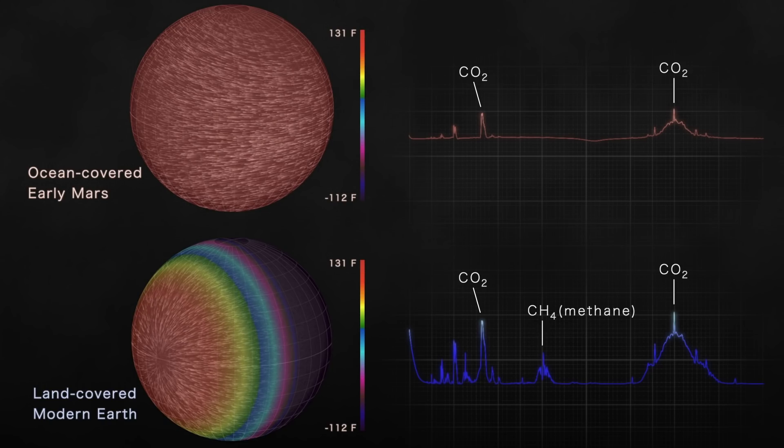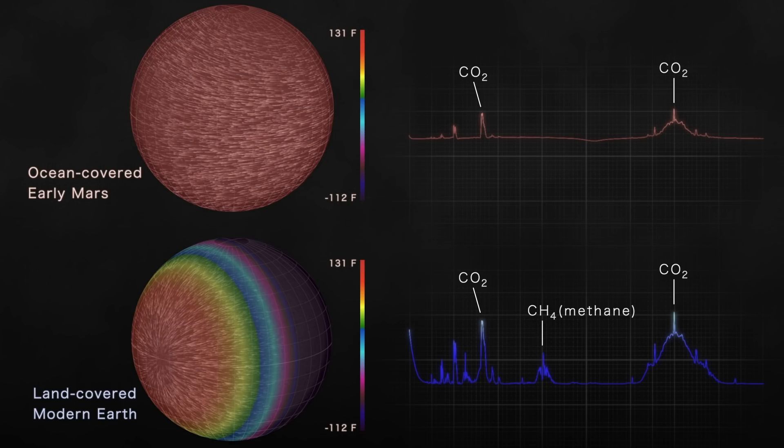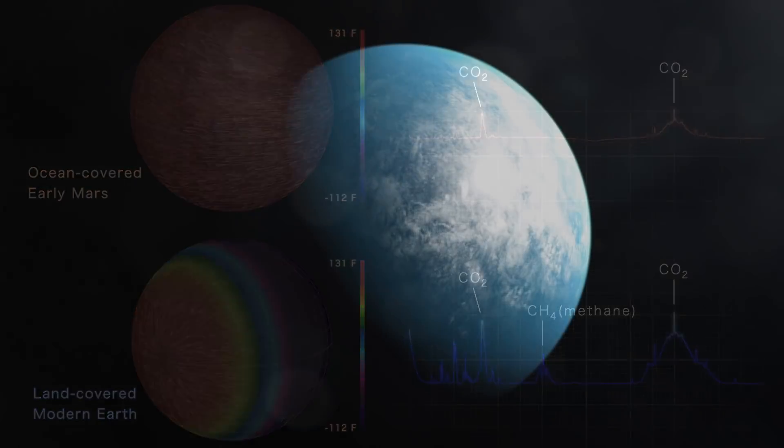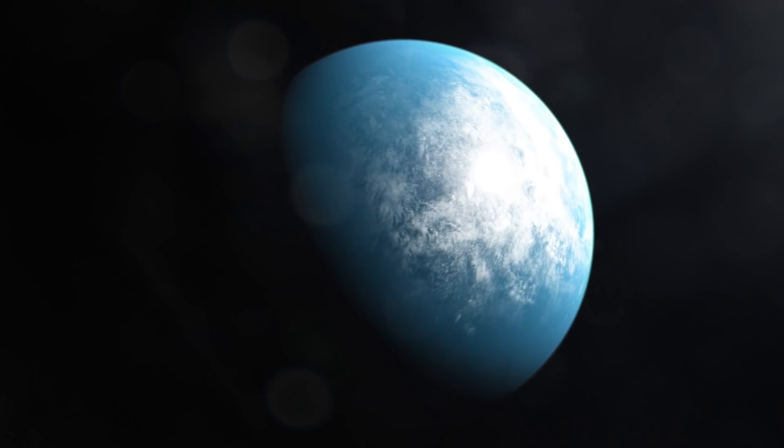By simulating these data now, scientists can make predictions for real future observations and narrow the range of TOI-700d's possible conditions.